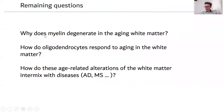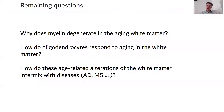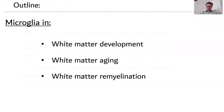Remaining open questions include understanding why there is myelin degeneration in aging. We haven't made much progress on that yet, but we have made progress in understanding oligodendrocyte responses in the aging white matter, and we want to understand how alterations in normal aging white matter intermix with diseases like multiple sclerosis — particularly the capacity to remyelinate.